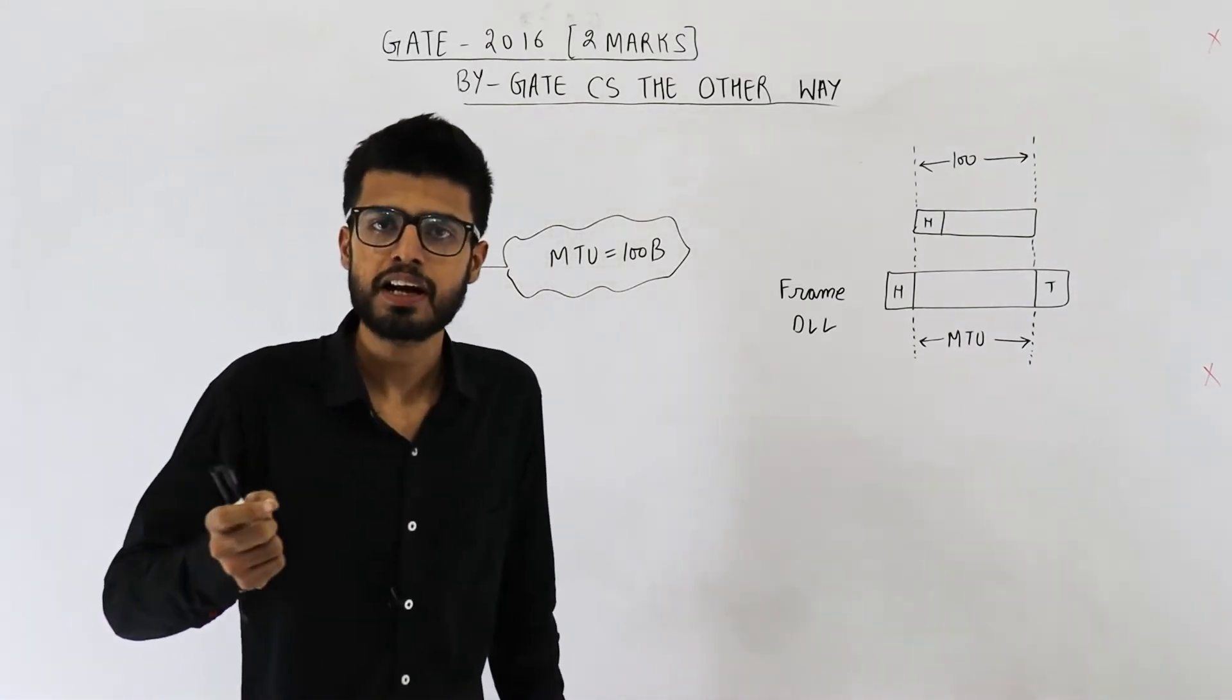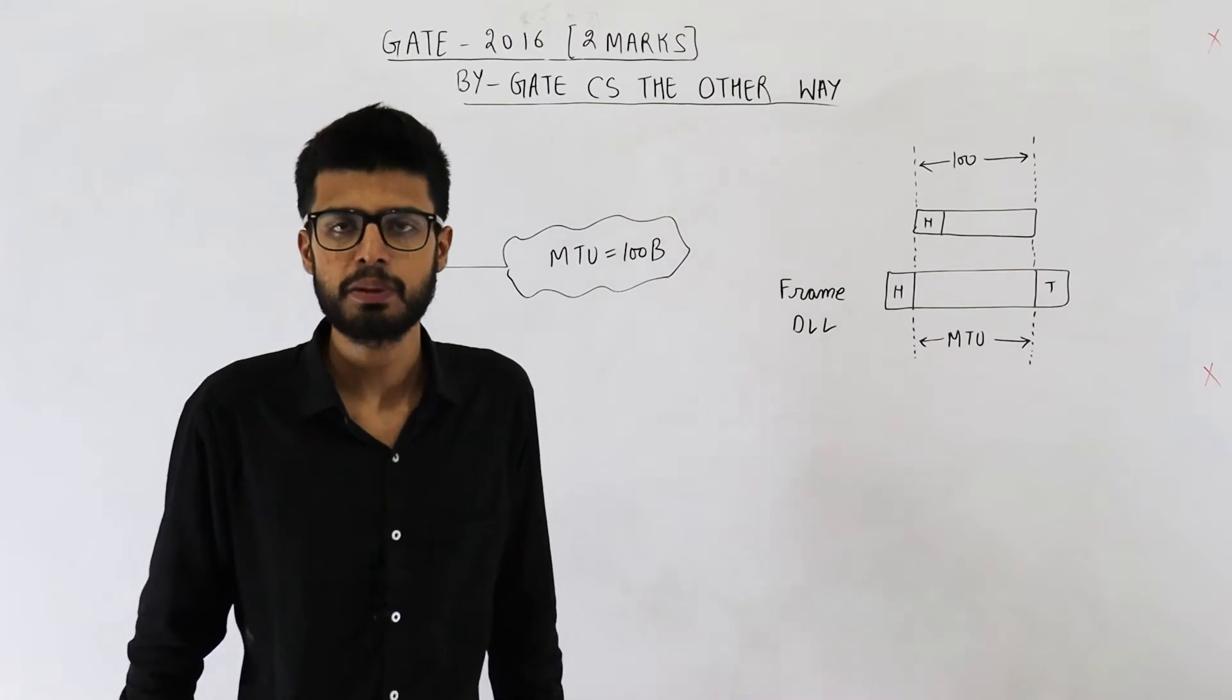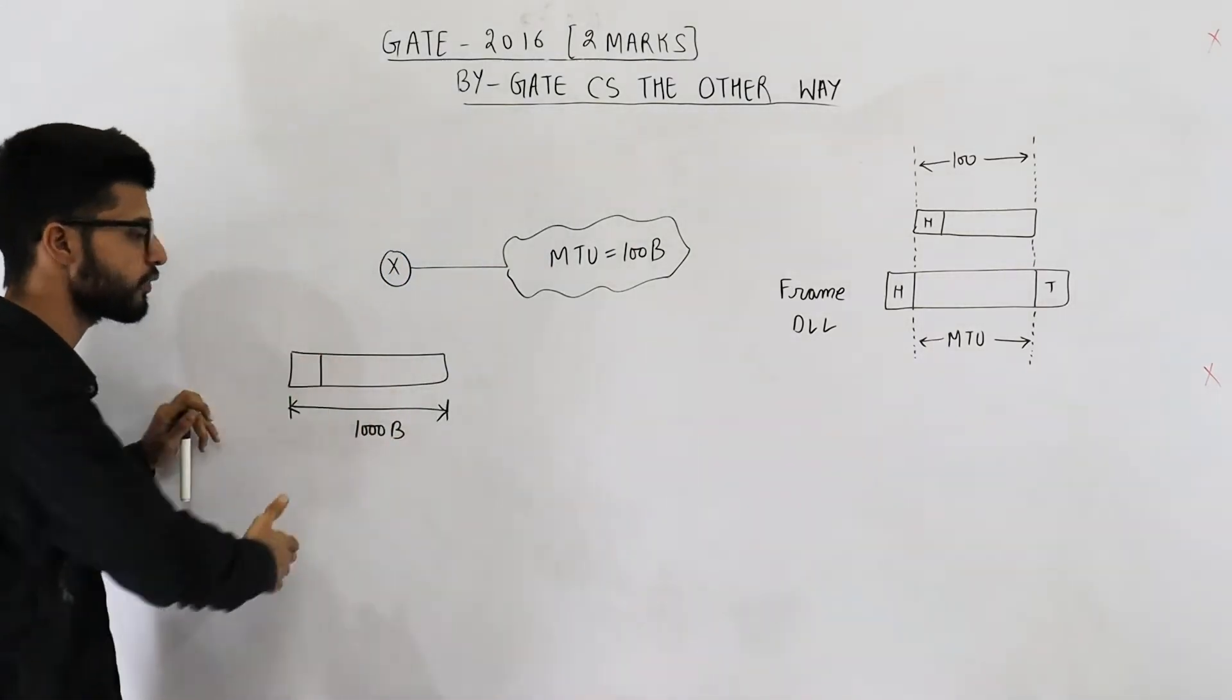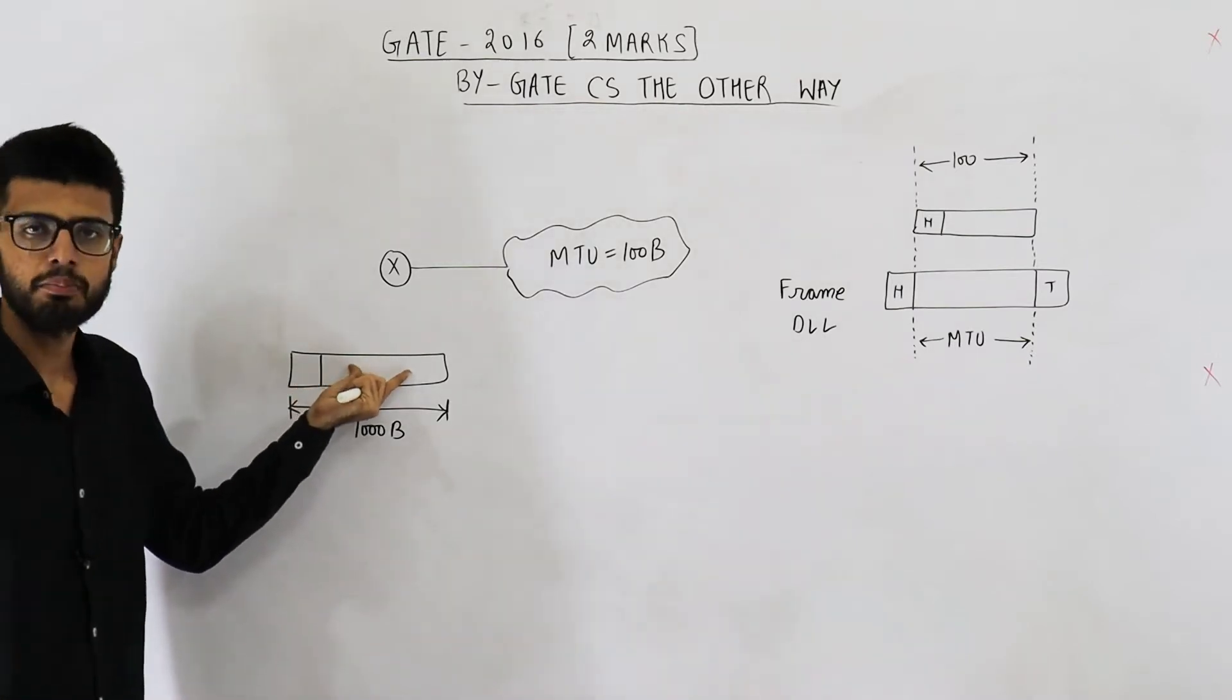Question is how many fragments will be created if IP header is of 20 bytes. You need to tell in how many smaller fragments will this datagram be divided.